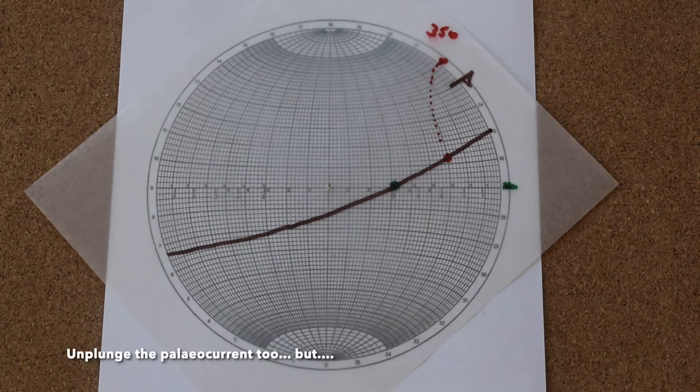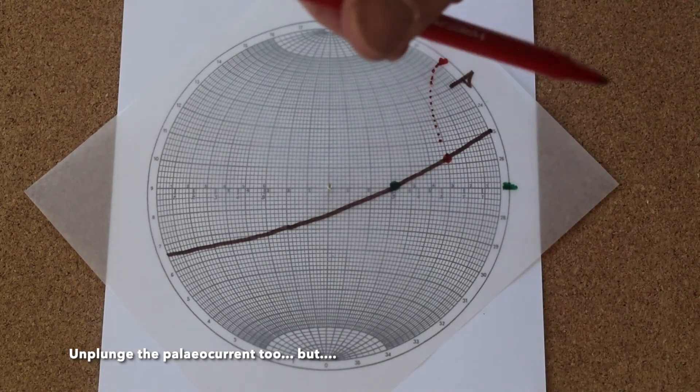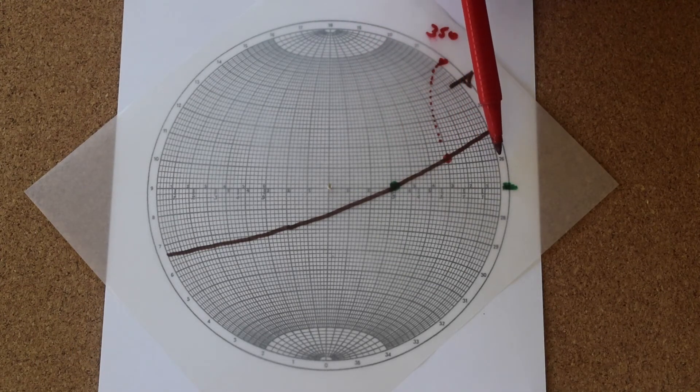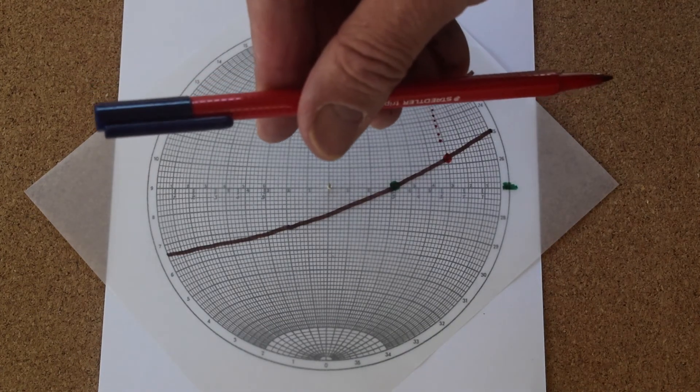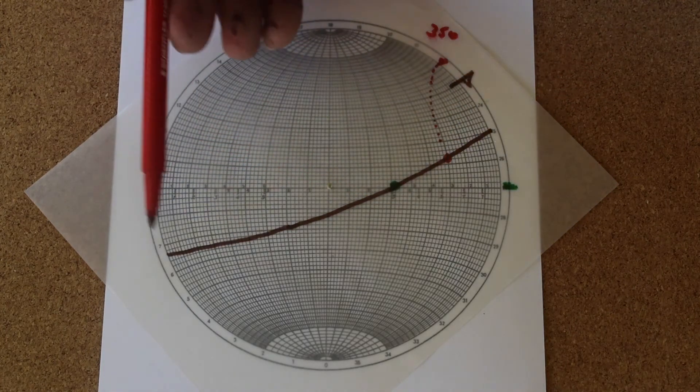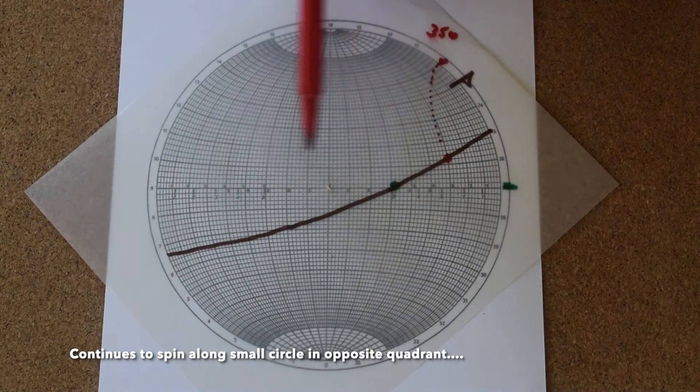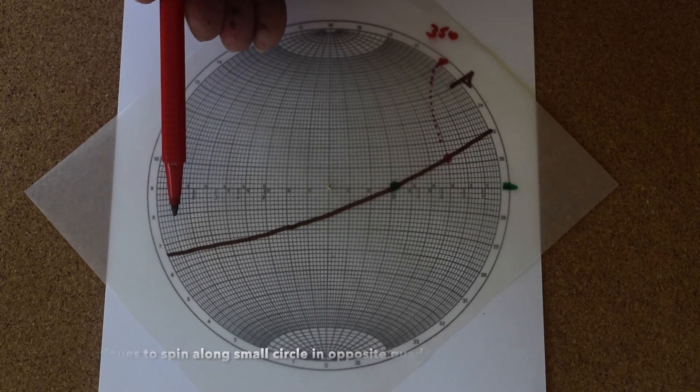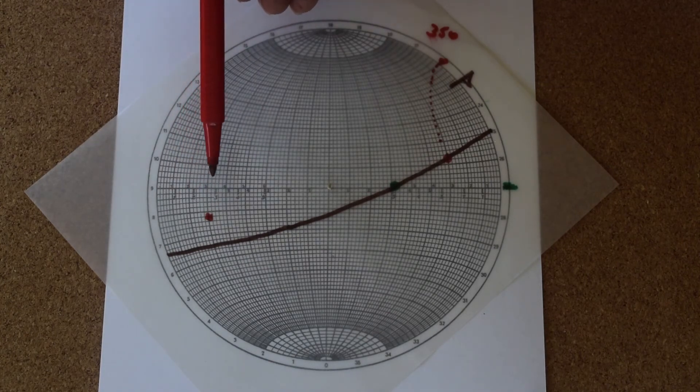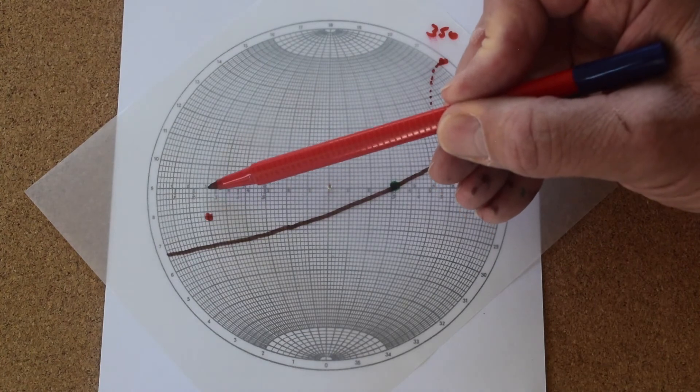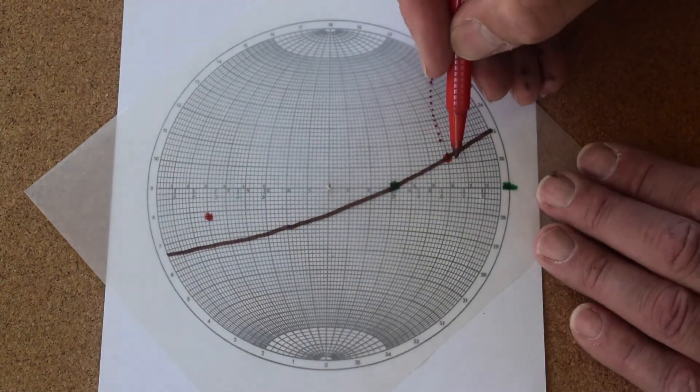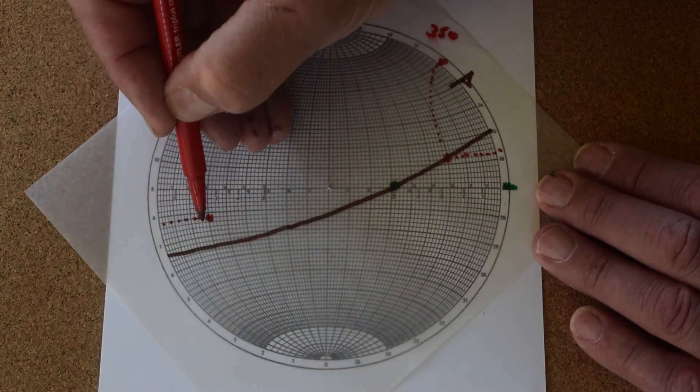So now let's rotate the paleocurrent by this 60 degrees rotation about this axis. So it's going to track along this trajectory here. 10, 20, 30. So it's already horizontal by the time we've done that spin of 30 degrees, but it's got another 30 degrees to go. So it's actually going to spin out into this part of the stereo net, another 30 degrees on this small circle here, 10, 20, 30, to there. So in other words, it's done this and then this to get to that position. So that is the unplunged orientation.